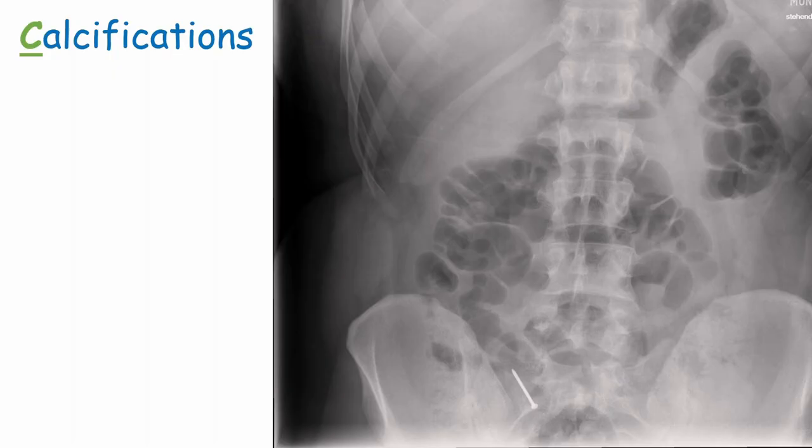A patient who swallowed a nail had it pass through the GI tract without causing any perforation. At that point in its journey, the nail was in the distal ileum, just before the cecum. This patient didn't require any surgical intervention - the nail passed naturally.